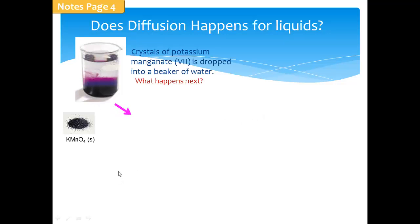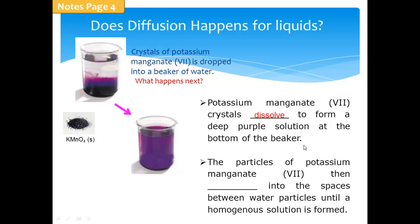it will first dissolve to form a deep purple solution at the bottom of the beaker. And after that, because there is a greater concentration of potassium permanganate-7 crystals at this region compared to the top of the beaker,